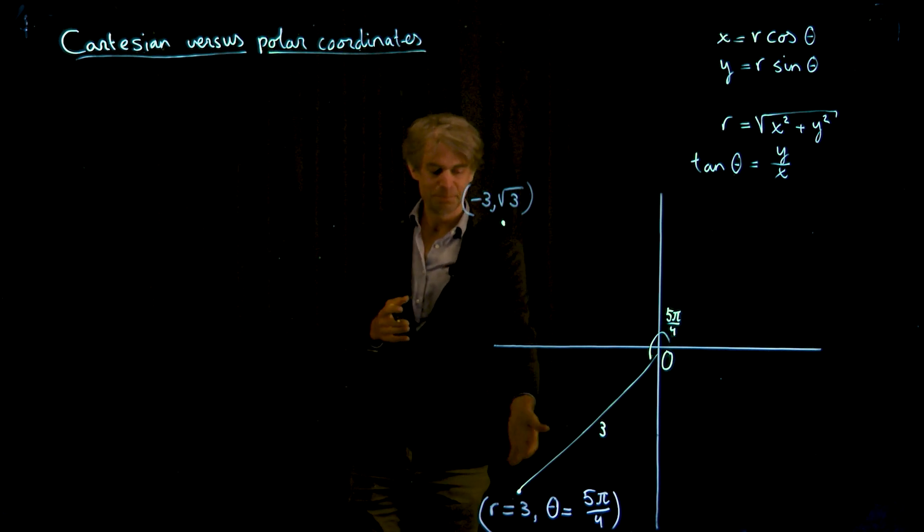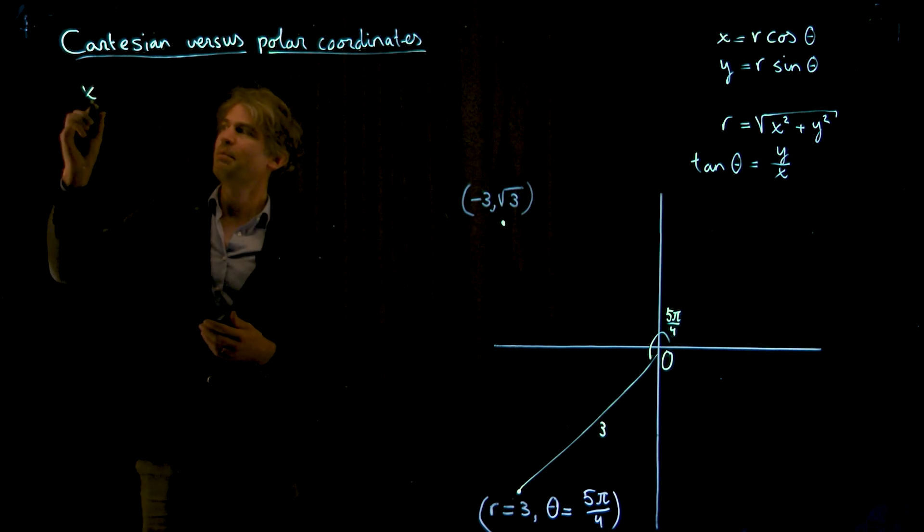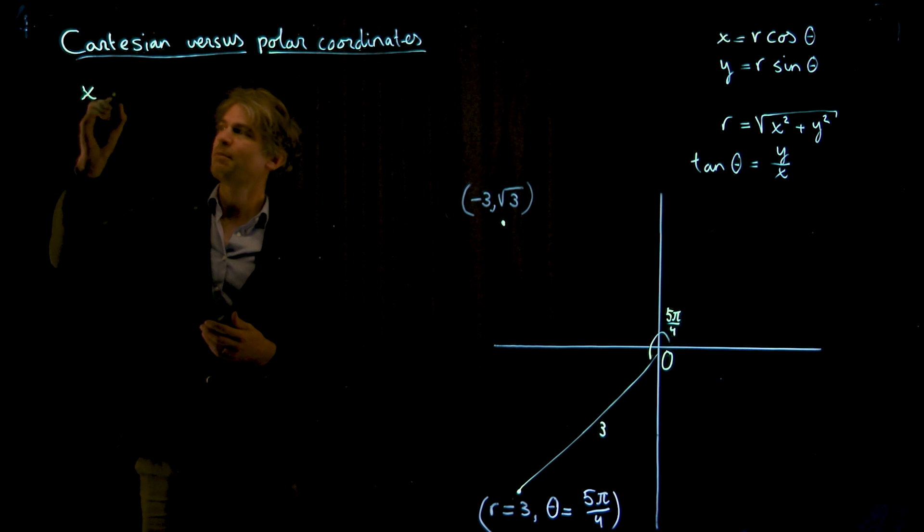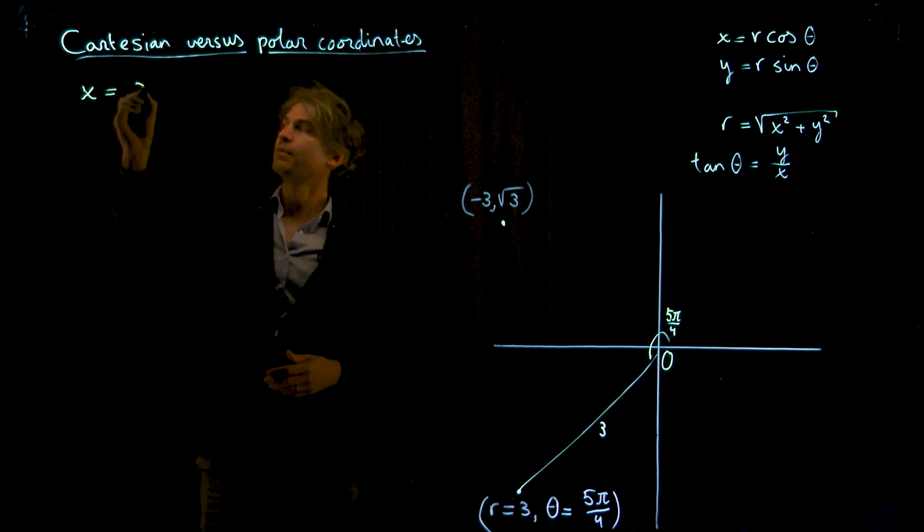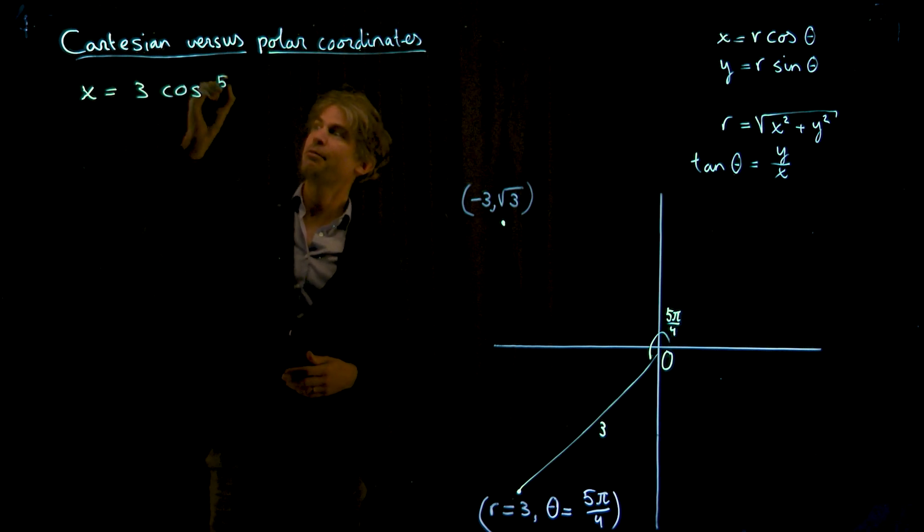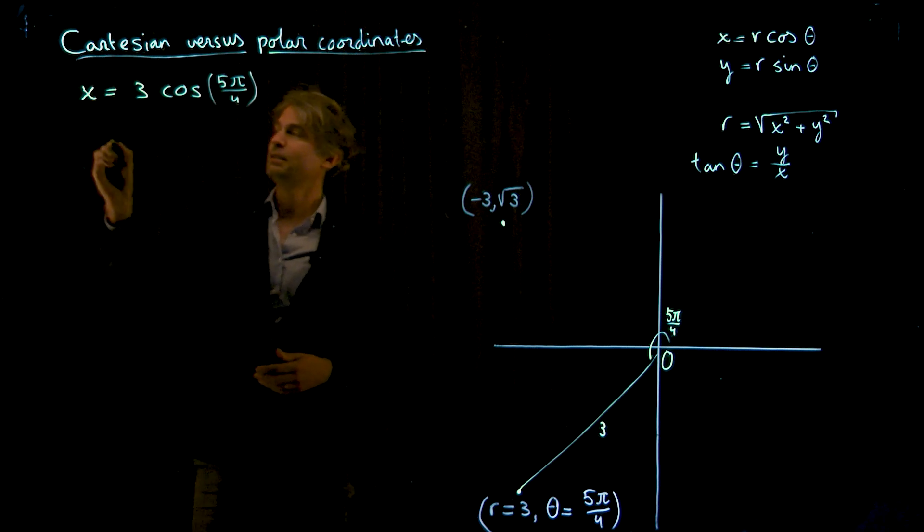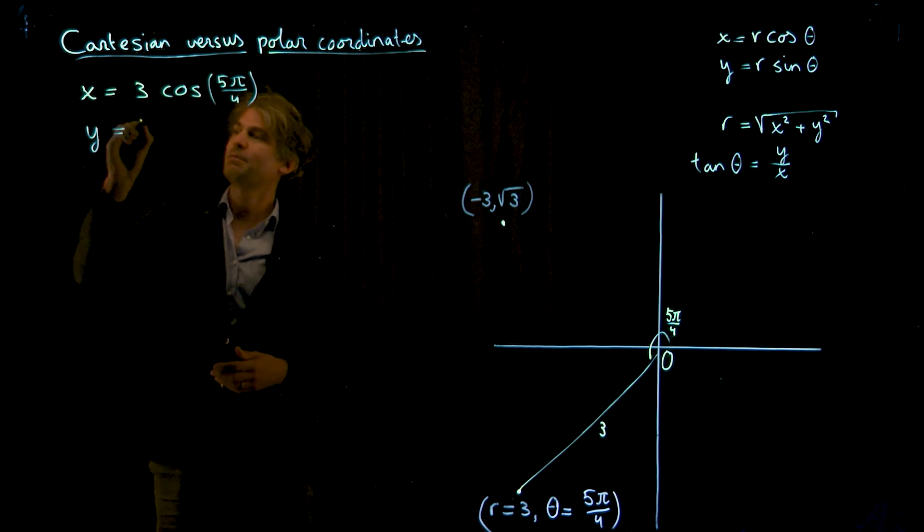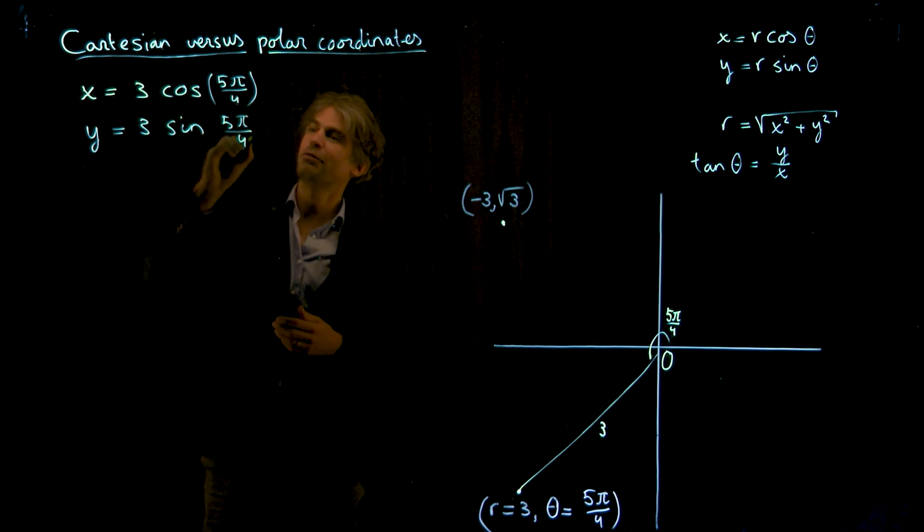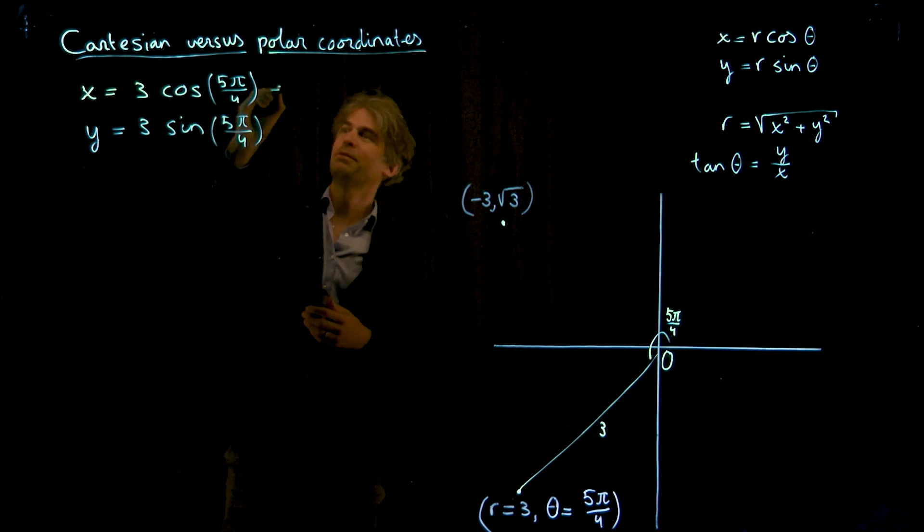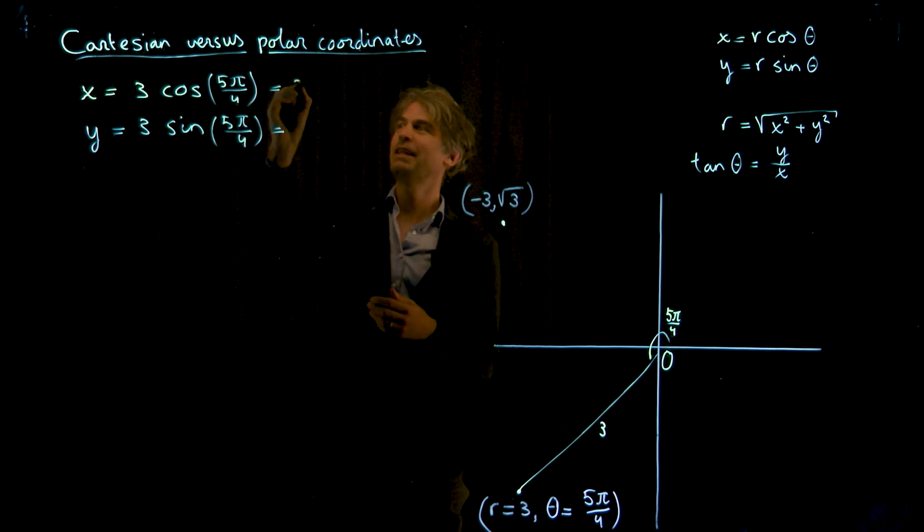Let's start with the one at the bottom, and let's try to compute x and theta. If I just plug the numbers in the formulas, then x would be computed by r, which is 3, times the cosine of 5 pi over 4. And the y would be 3 times the sine of 5 pi over 4.